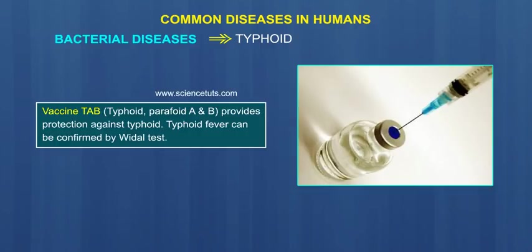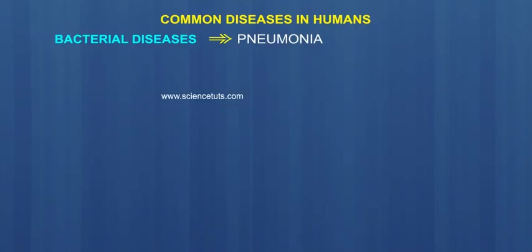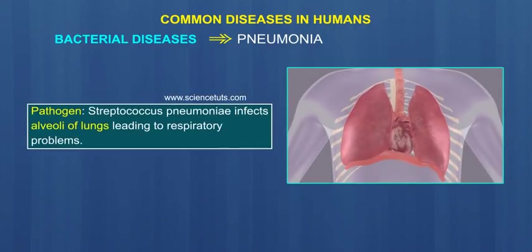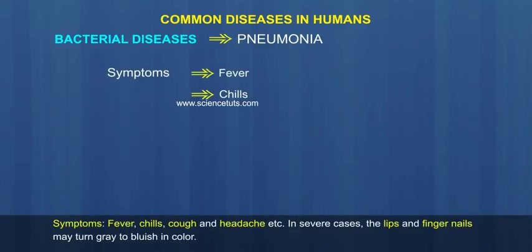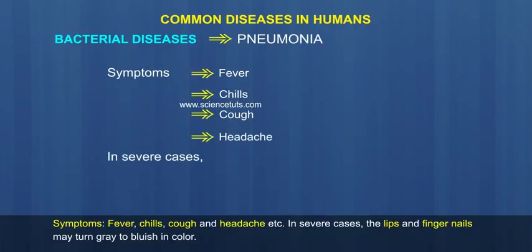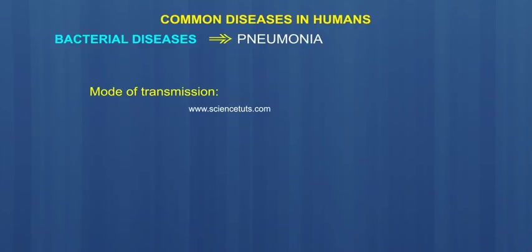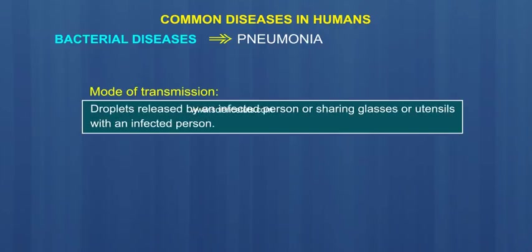Typhoid fever can be confirmed by the Widal Test. Pneumonia. Pathogen: Streptococcus Pneumoniae. Pneumonia infects the alveoli of the lungs, leading to respiratory problems. Symptoms include fever, chills, cough, and headache. In severe cases, the lips and fingernails may turn grey to bluish in colour. Mode of Transmission: droplets released by an infected person, or sharing glasses or utensils with an infected person.